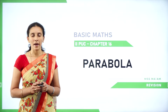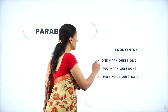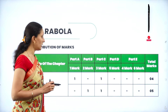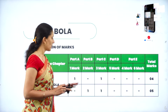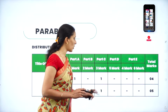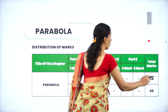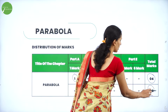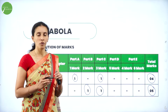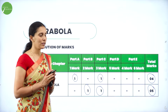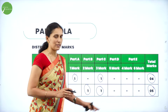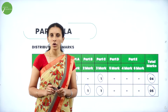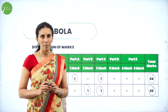From the chapter parabola, you may expect one-mark questions, two-mark questions, or three-mark questions. You might get one one-mark question and one three-mark question, totalling four marks from this chapter, or one two-mark question and one three-mark question, totalling five marks. So you may expect four to five marks from this chapter in the form of one plus three or two plus three.